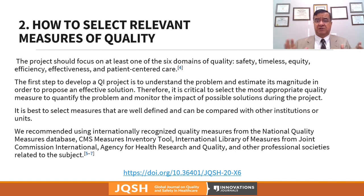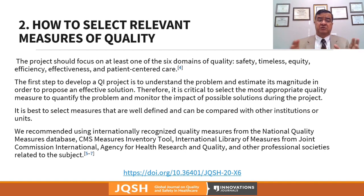The first step before starting any project is to quantify and define the problem you are going to address — what type of problem it is, the magnitude of it, and what population it affects. Then, select a measure that quantifies that problem, because that's what you'll use to monitor your project going forward. If your institution does not have specific measures, you can select measures from international organizations such as the National Quality Measures Database, the International Library of Measures, or the CMS Measures Inventory Tool.